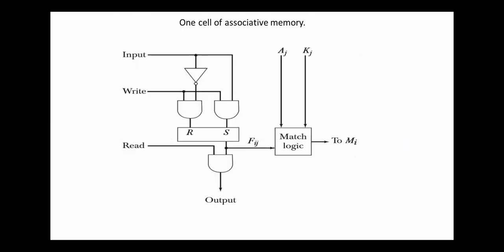Regarding the internal organization of a typical cell C_IJ: it contains a flip-flop F_IJ, and the circuits required for reading, writing, and matching the cell.